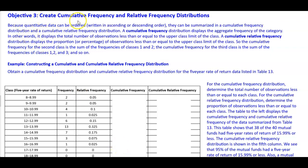Objective 3: Create cumulative frequency and relative frequency distributions. Because quantitative data can be ordered — written in ascending or descending order — they can be summarized in a cumulative frequency distribution and a cumulative relative frequency distribution.